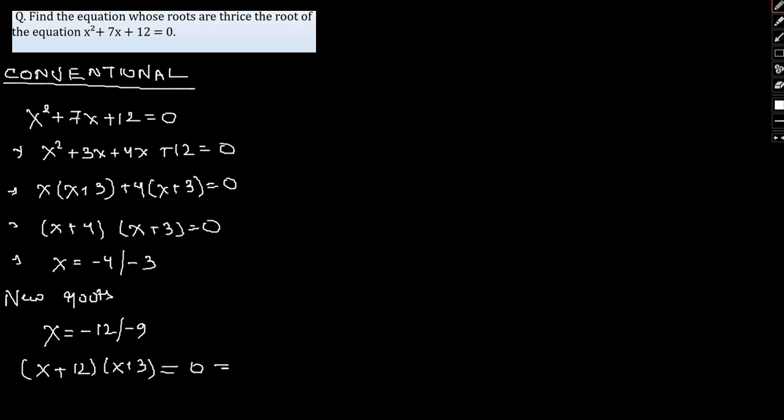And therefore if we solve the same, if it is equal to 0 and if we find the solution, it would be x² + 12 + 9, that is 21x + 108 = 0. This will be our required answer or equation. So this is the conventional approach.